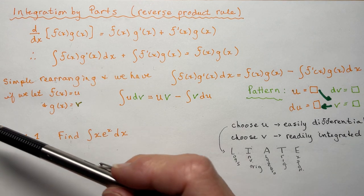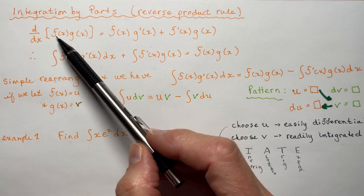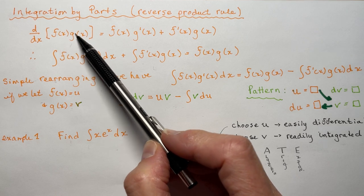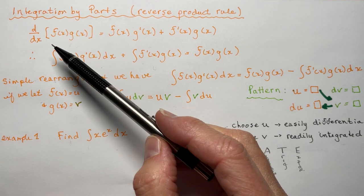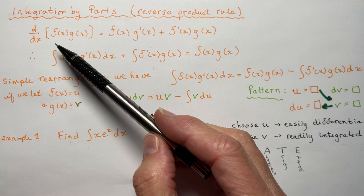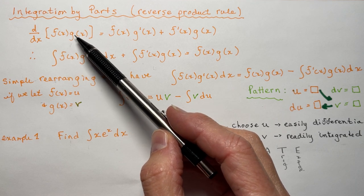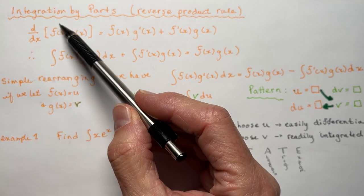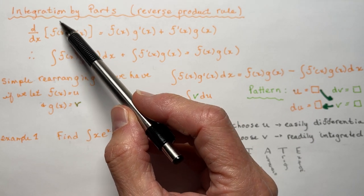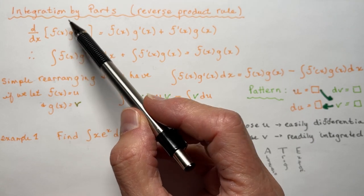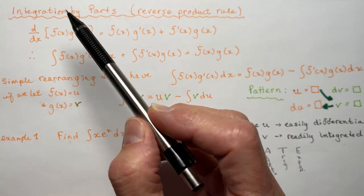So if we go back to what the derivative of two functions multiplied together is — remember when you were learning about taking the derivative of a product, you'd have something like x·cos(x), or 2x·cos(x), or something that's a product of two separate functions.